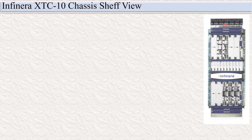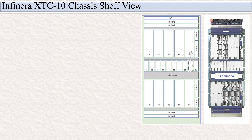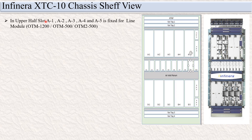You can see here, this is the physical view of the INFINERA XTC 10 chassis and this is the block diagram. In the INFINERA XTC 10 chassis self-view, you can see the upper half slot, the lower half slot, and the middle slot.